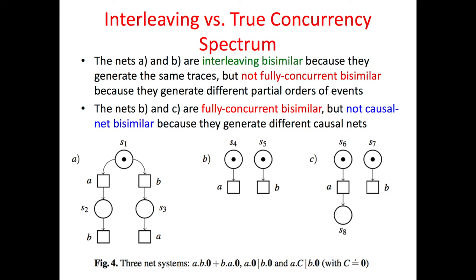To illustrate the interleaving through concurrency spectrum, consider the three nets in this picture. The nets A and B are interleaving bisimilar but not fully concurrent bisimilar because they generate different partial orders.